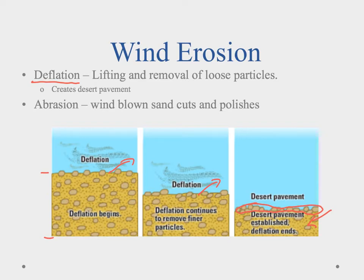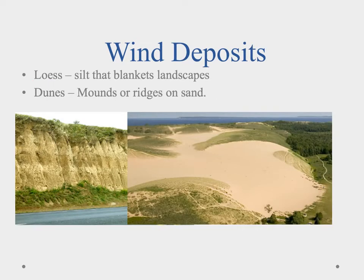The other type of erosion we can have is abrasion, where windblown sand basically sandblasts, cutting and polishing through other things. If you've ever walked on the beach with the wind blowing, you could feel that sand whip across your legs — that's abrasion. There are two primary kinds of wind deposits. The first is loess, which is a silt that blankets an entire landscape. We can see thick layers of silt that have built up in the Midwest, and that's what caused the formation of such fertile soil in the breadbasket of America.